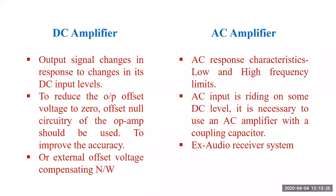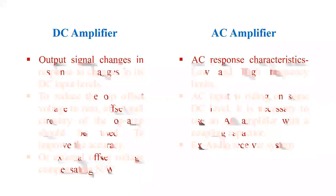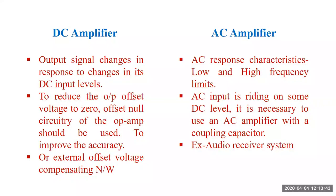In an AC amplifier, the AC input is riding on some DC level, so DC is required for biasing. It is necessary to use coupling capacitors. The coupling capacitor serves two purposes: first, it blocks DC and allows only AC; second, it limits the lower cutoff frequency — it determines what the low cutoff frequency value is in the AC amplifier.